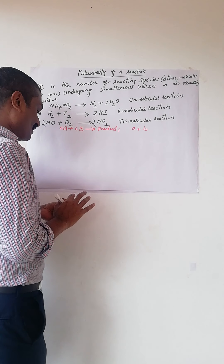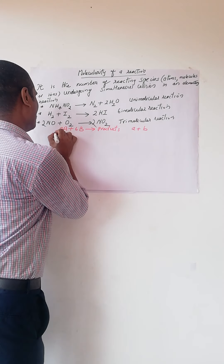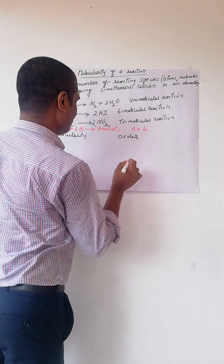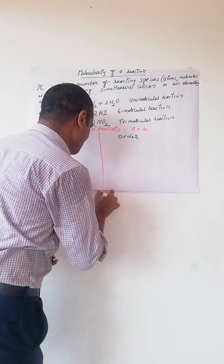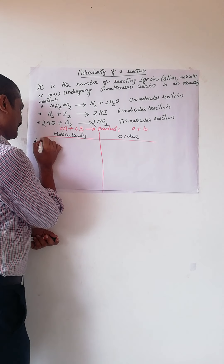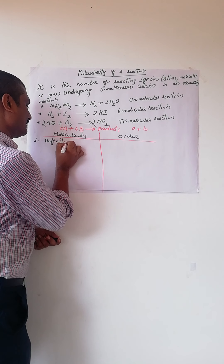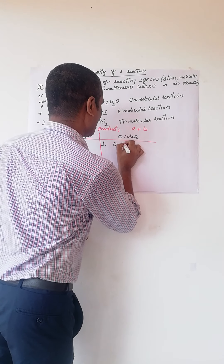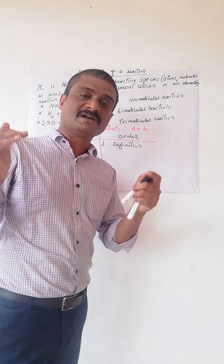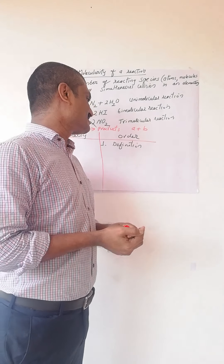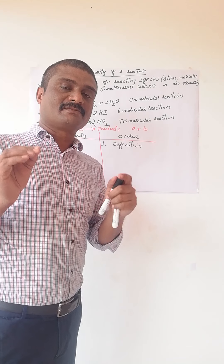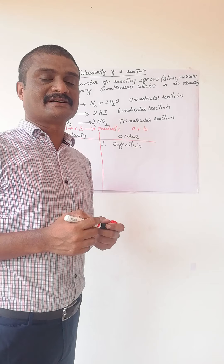Now we will see the differences between order and molecularity of reaction. The first difference is the definition: molecularity is the number of reactive species undergoing simultaneous collision in an elementary reaction, whereas order is the sum of the powers of the concentration terms in the rate law expression.